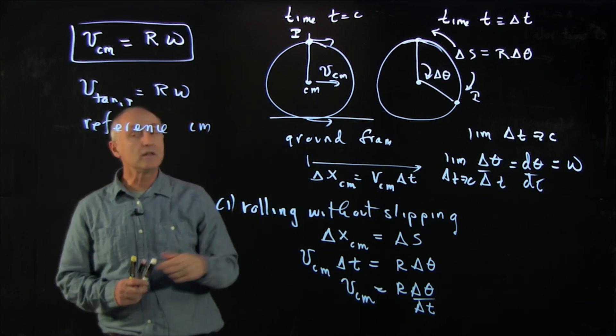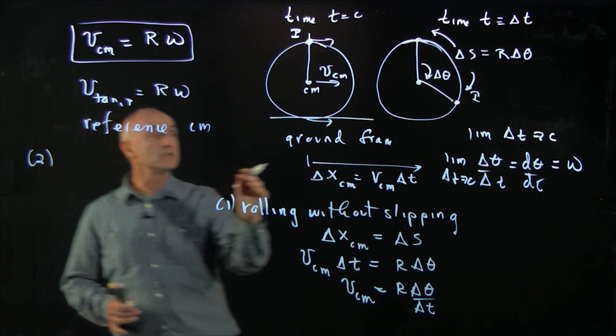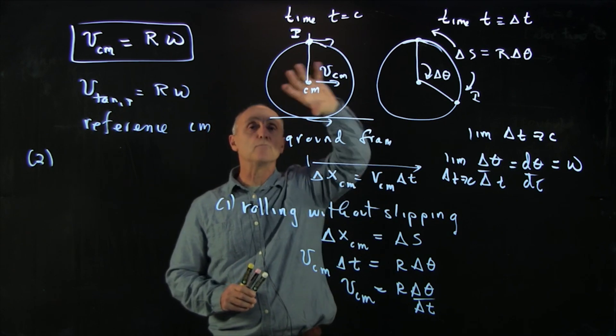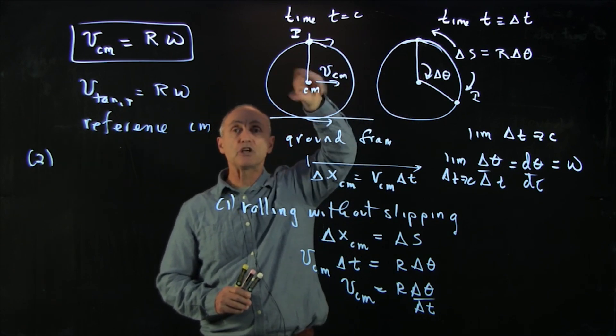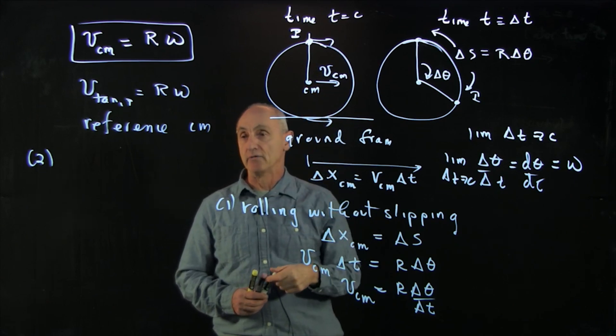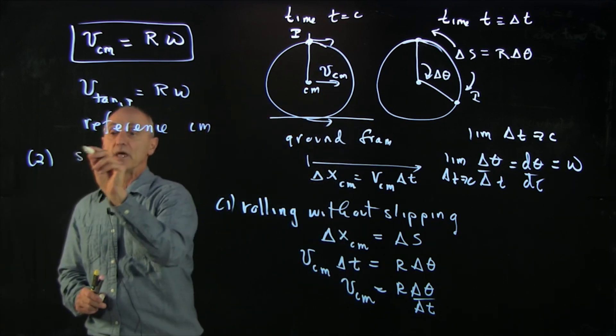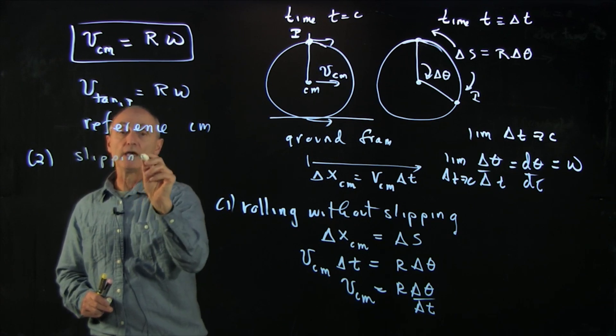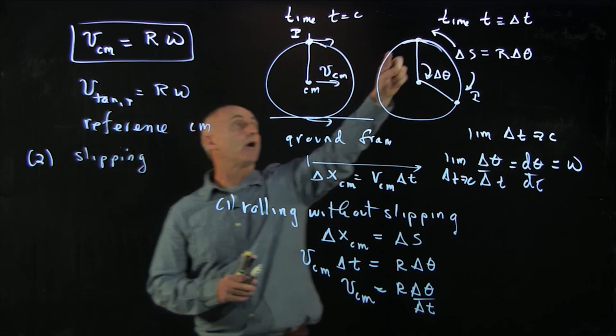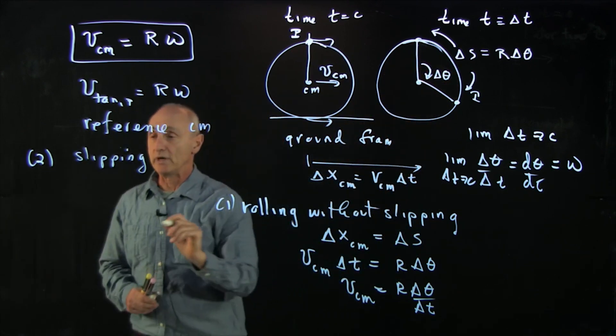Now our second case, imagine that the wheel is not moving forward at all, but it's just spinning. That's what we call the wheel is slipping on the ground, for instance, if there were ice. And so what we call slipping is a little bit more general. It's whenever the wheel is spinning and the arc length is much greater than the horizontal distance that the wheel is moved.